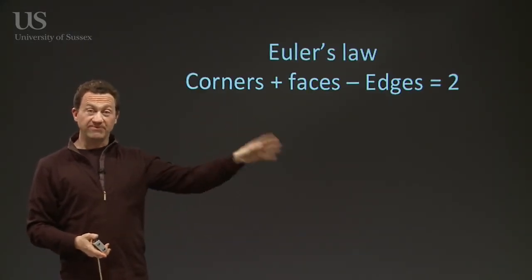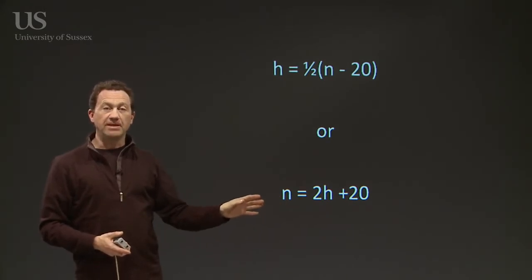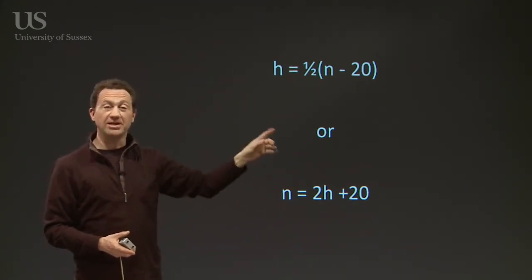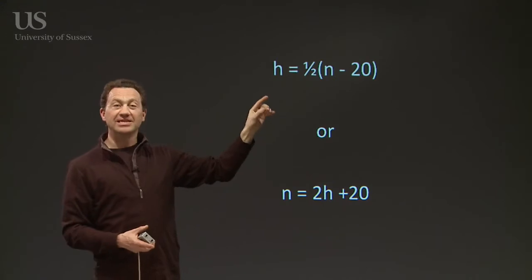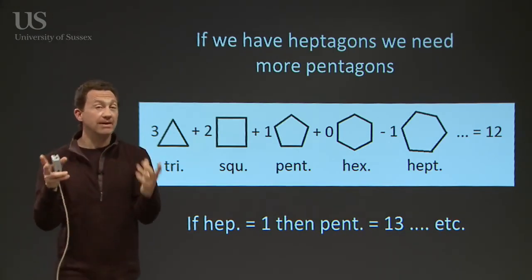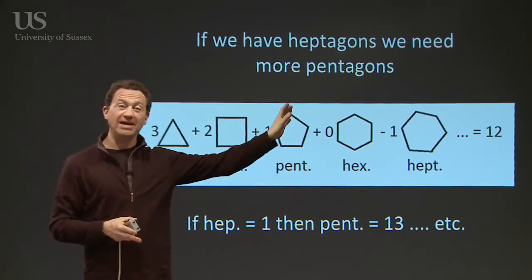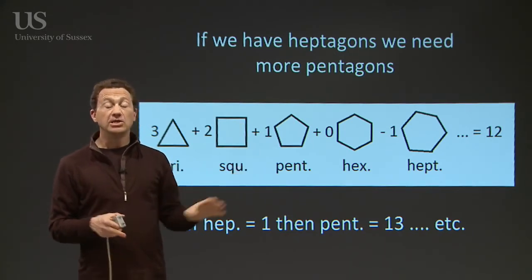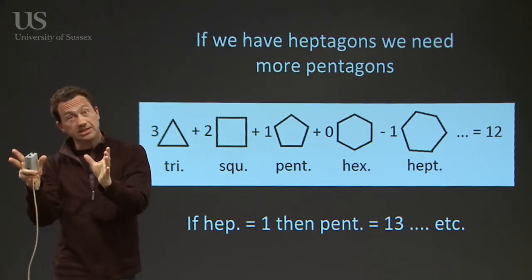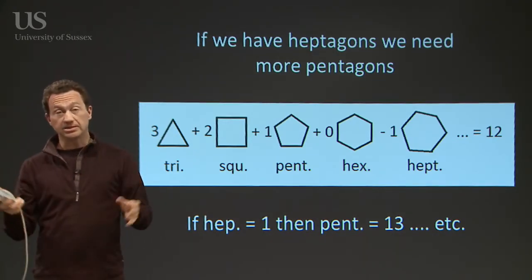Going back to Euler's law in terms of corners, faces, and edges, we can re-express this in terms of the number of hexagons or the number of atoms. The number of atoms in a fullerene cage is two times the number of hexagons plus twenty, or if you want the number of hexagons it's half times the number of atoms minus twenty. You can use this to work out the number of atoms in a structure. If you've got a structure with heptagons or octagons in it, the maths shows that for every heptagon you need an extra pentagon to balance. So you can have fullerene structures with seven-membered rings, but you need an extra pentagon — fourteen pentagons and an octagon would require two extra pentagons, and so on.